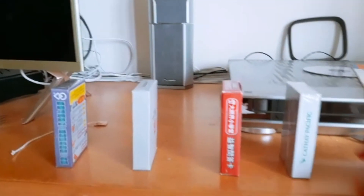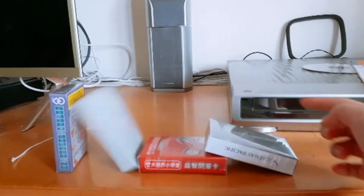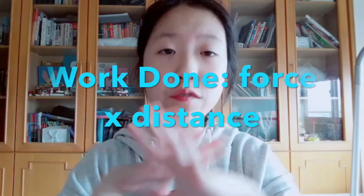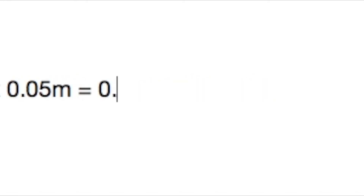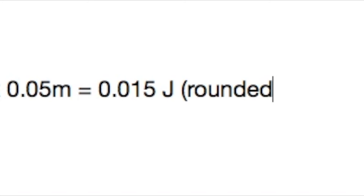I also calculated the work done, but this time it's not marbles — it's the dominoes' turn. To calculate work done, the equation is force times distance. I already calculated the force done by a single domino, which is 0.924 newtons. Then I multiplied it by 0.05 meters, and it equals 0.015 joules — also rounded up. And that is that.